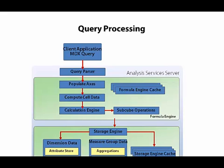Even if the data is at a lower granularity, it's still useful. For example, if a previous query requested sales by quarter, and the current query is for sales by year, Analysis Services knows that it can easily add up each quarter to get the year values.